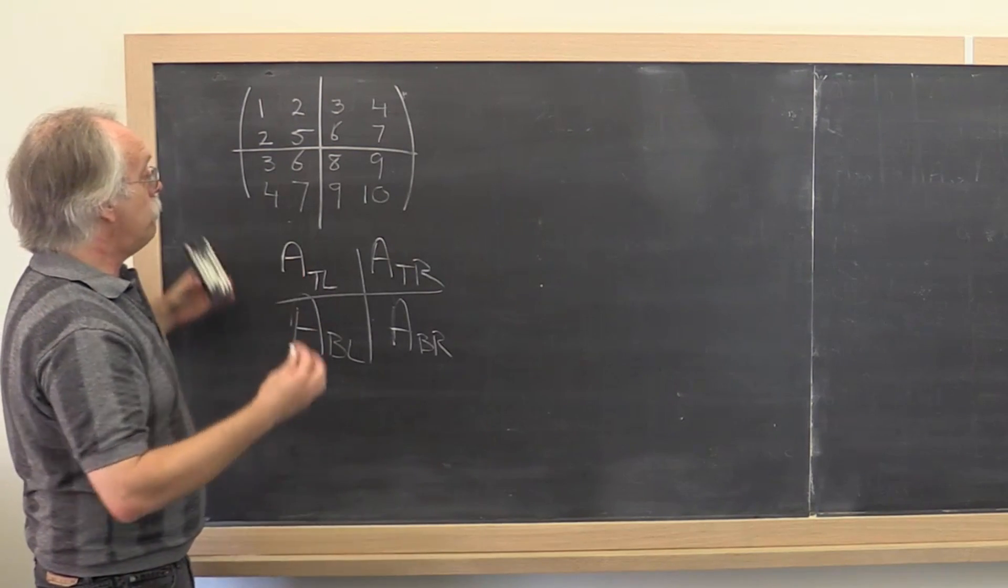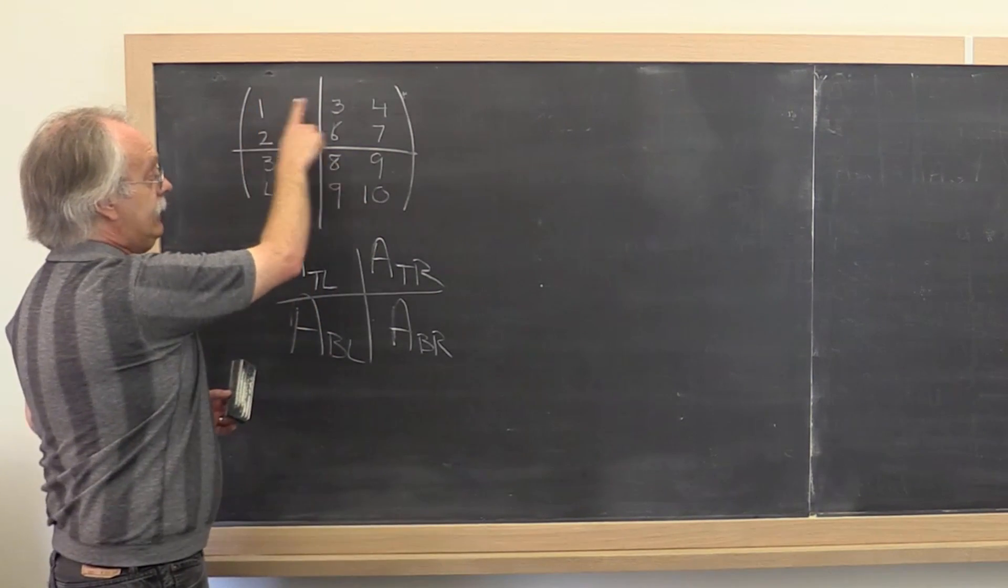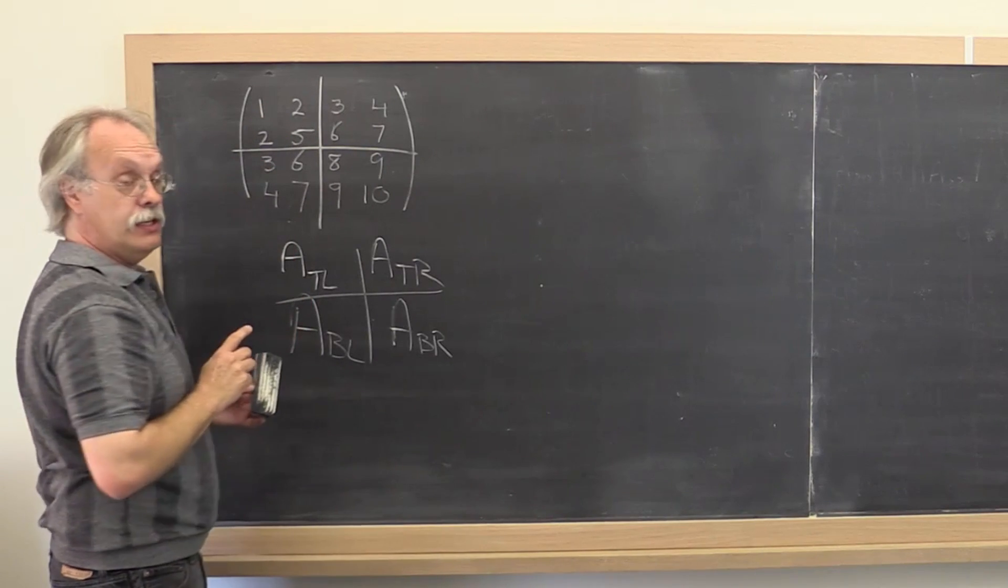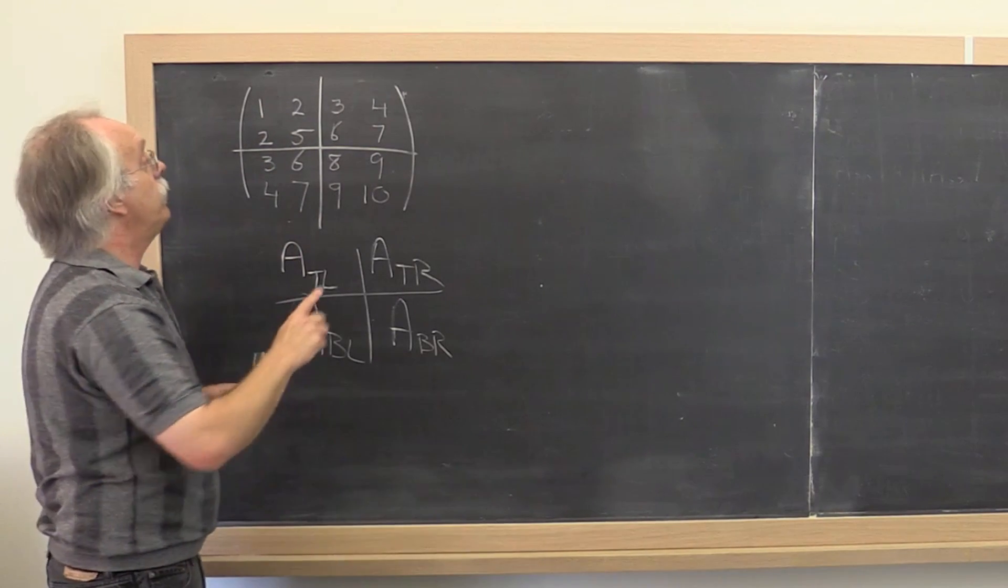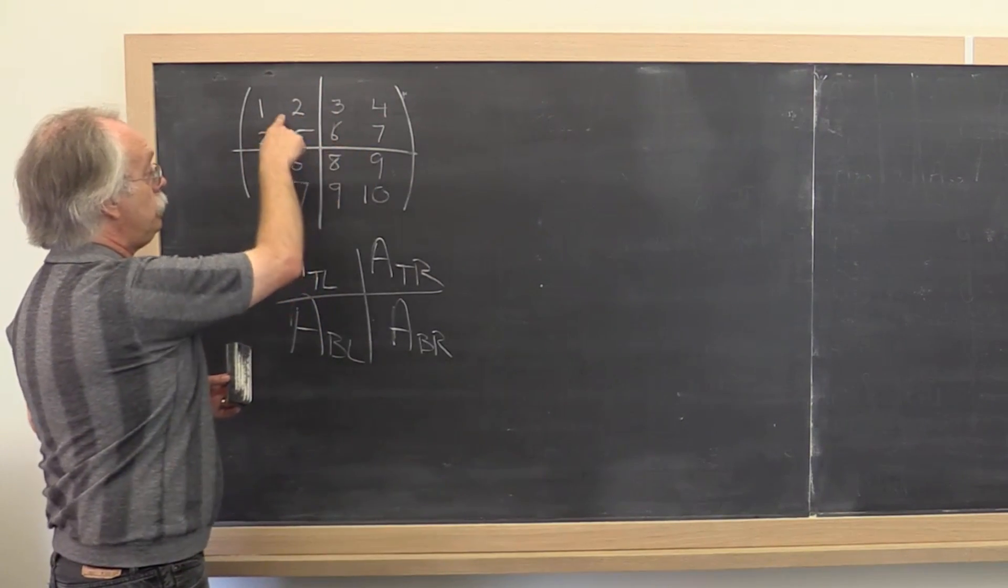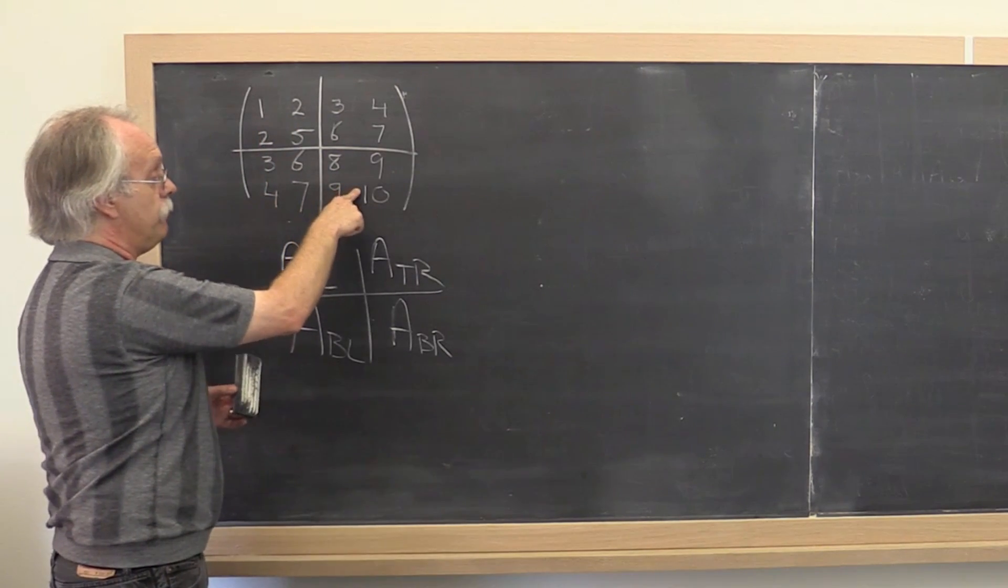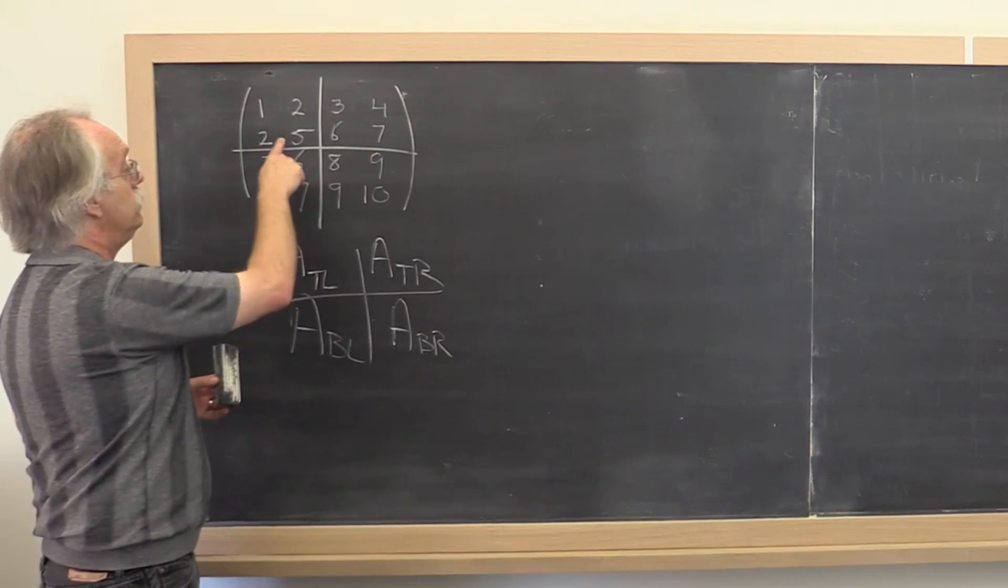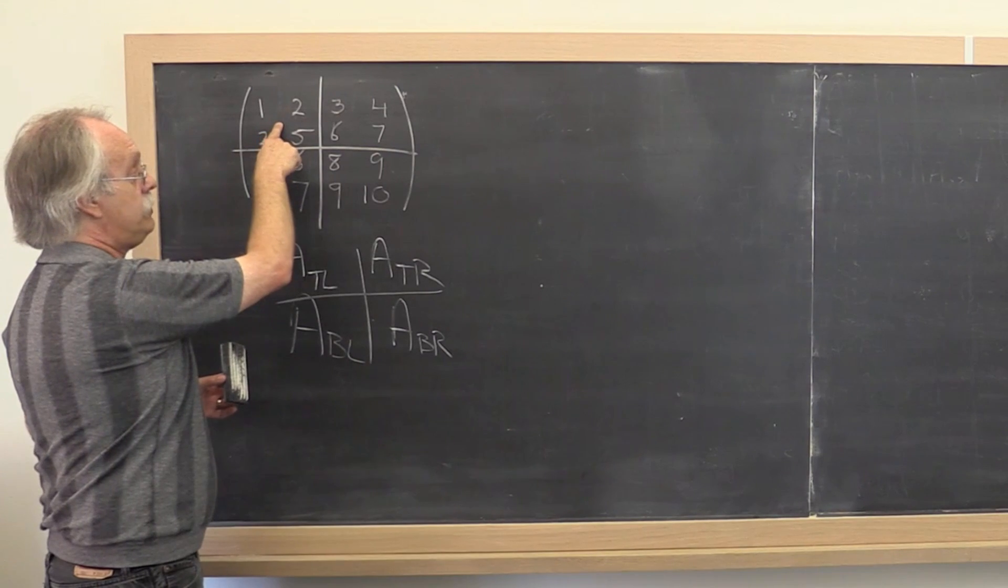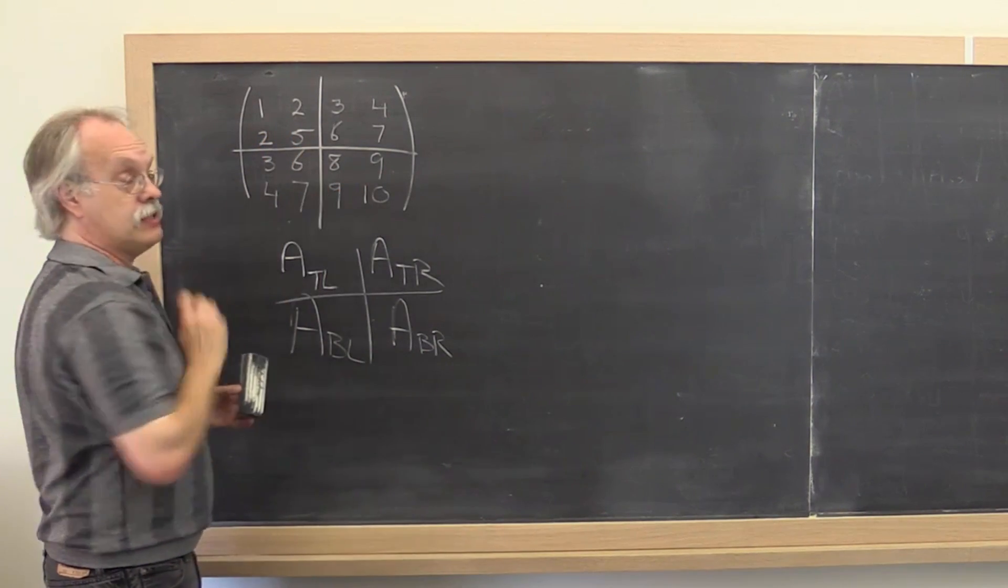Now what are some properties? Notice that if a matrix is symmetric, it is a square matrix. If you then partition it so that this is a square matrix and therefore that is a square matrix, then this matrix is symmetric as is that matrix.